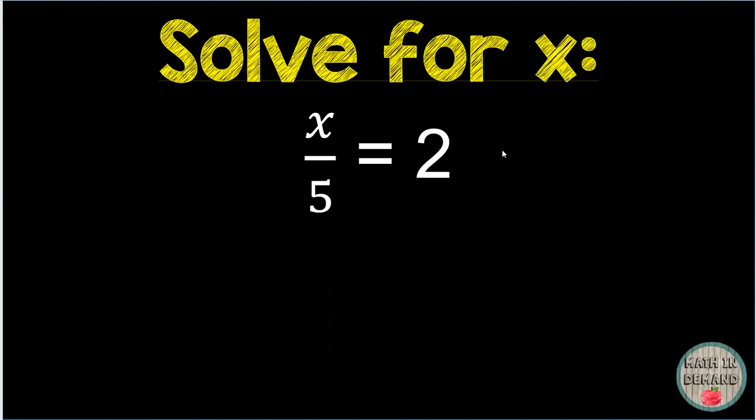Last problem that we are going to see for one-step equations is x divided by 5 equals 2. When I read the problem out, it says x divided by 5. Opposite of division is multiplication. So I am going to multiply both sides by the denominator because I want to get rid of the denominator. This is the same thing as 1 fifth. The reciprocal is 5. So I am going to multiply both sides by 5. 5 divided by 5 is just 1. So I am left with x equals 2 times 5 is 10.